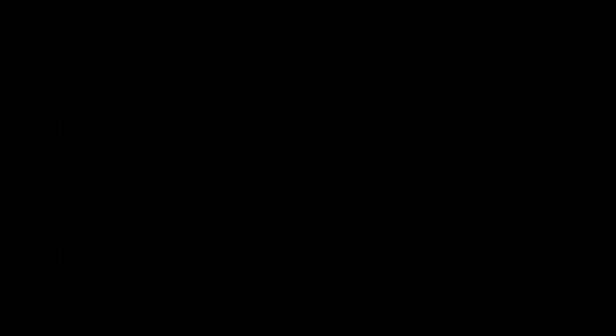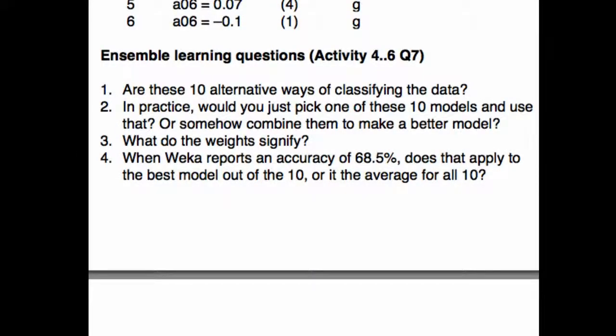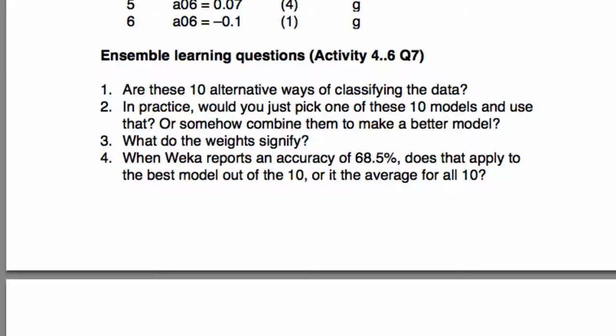Ensemble learning questions. There were some questions on ensemble learning about these 10 1R models. So, these 10 alternative ways of classifying the data. Well, in a sense, but they're used together. Adaboost M1 combines them. In practice, you don't just pick one of them and use that. Adaboost combines these models inside itself where the predictors it prints are produced by its combined model. The weights are used in the combination to decide how much weight to give each of these models. And when Weka reports a certain accuracy, that's the combined model. It's not the average. It's not the best. It's combined in the way that Adaboost 1R combines them. So, that's all done internally in the algorithm.